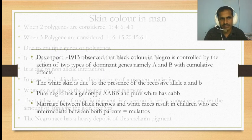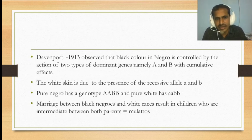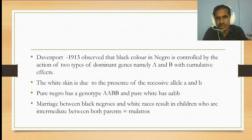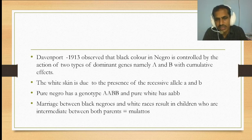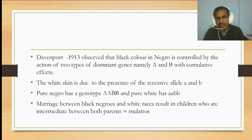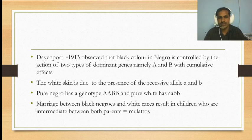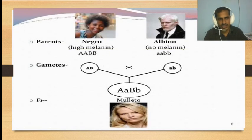Davenport in the year 1913 observed that black color in Negroes is controlled by two types of dominant genes — capital A and capital B — with cumulative effects. White skin is due to the presence of recessive alleles small a and small b. Pure Negro has the genotype AABB, and pure white has the genotype aabb. Marriage between Negro and white results in intermediate children called mulattoes.